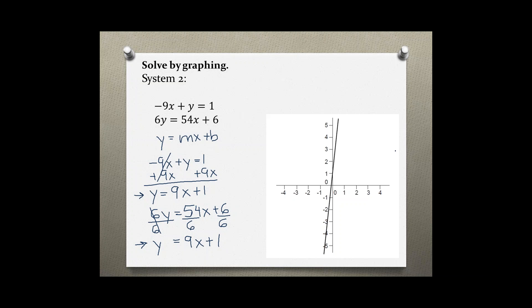Going back to our graph, we have the first equation and the second equation, which are basically the same line. So the solution to this system is infinitely many solutions.